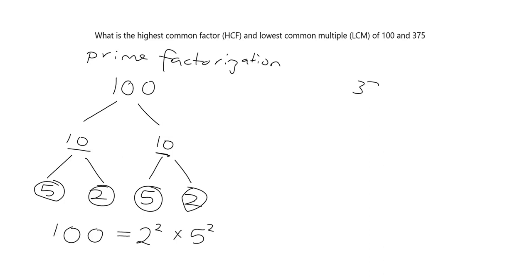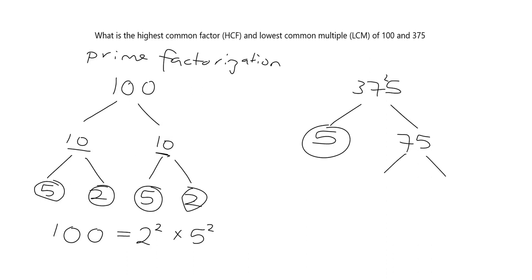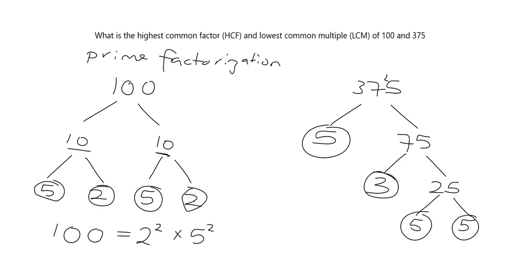Let's do the same for 375. Five obviously goes in: 5 goes into 375 giving 75. This 5 is a prime number so I circle it. 75 isn't prime, so I break it down further. Three goes in because 3 times 25 gives me 75. Three is a prime number, so I circle it. Twenty-five: can I break it down? Yes — 5 times 5. So 375 equals 3 × 5³.